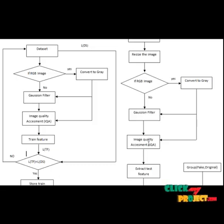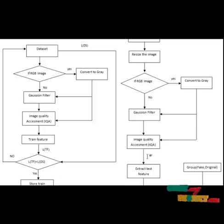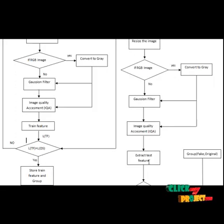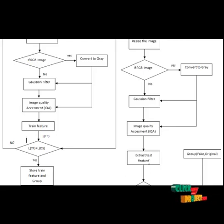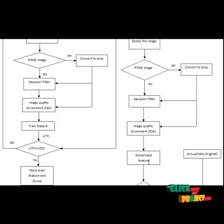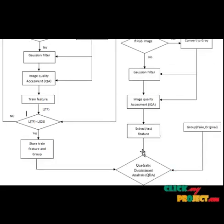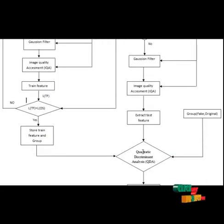We extract 11 image quality values in the image quality assessment process. Then we go to the test feature extraction process, where all 11 quality values are stored as the test feature. The test feature then goes to the QDA (Quadratic Discriminant Analysis) classifier, along with the training feature.